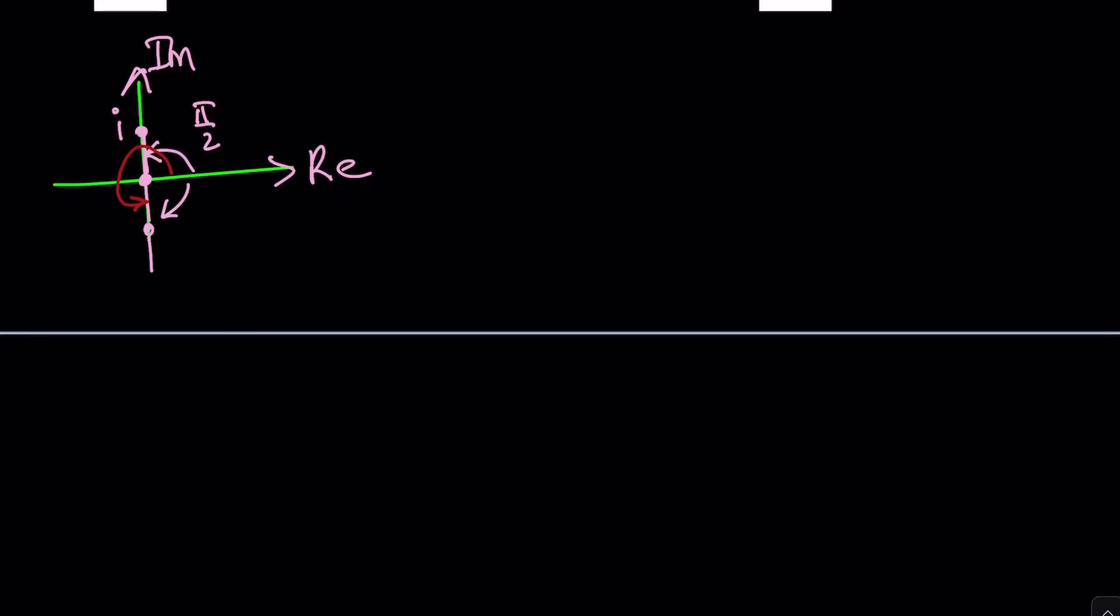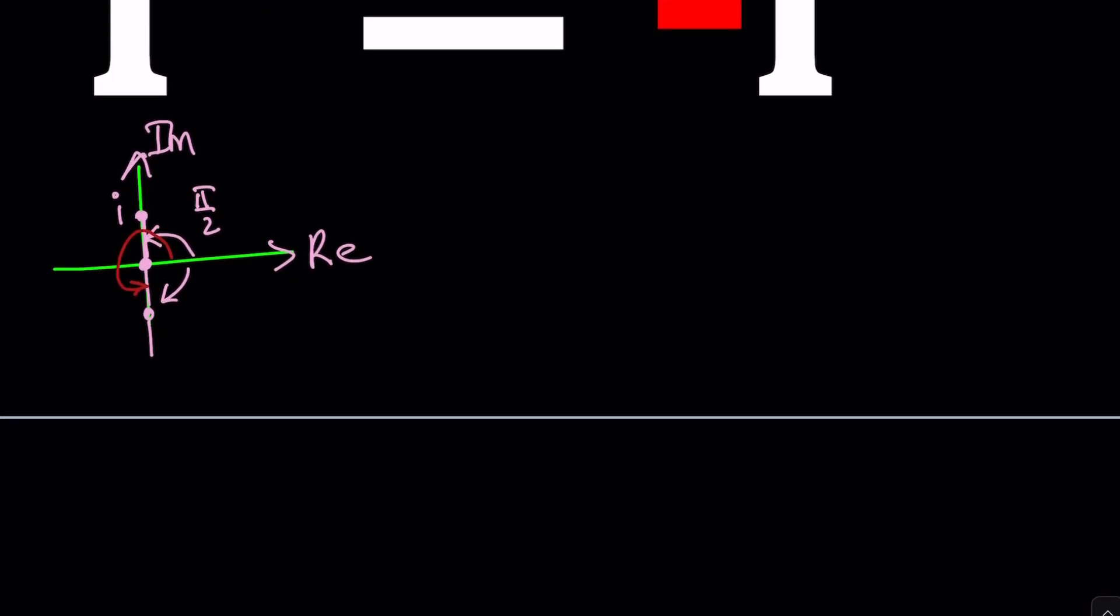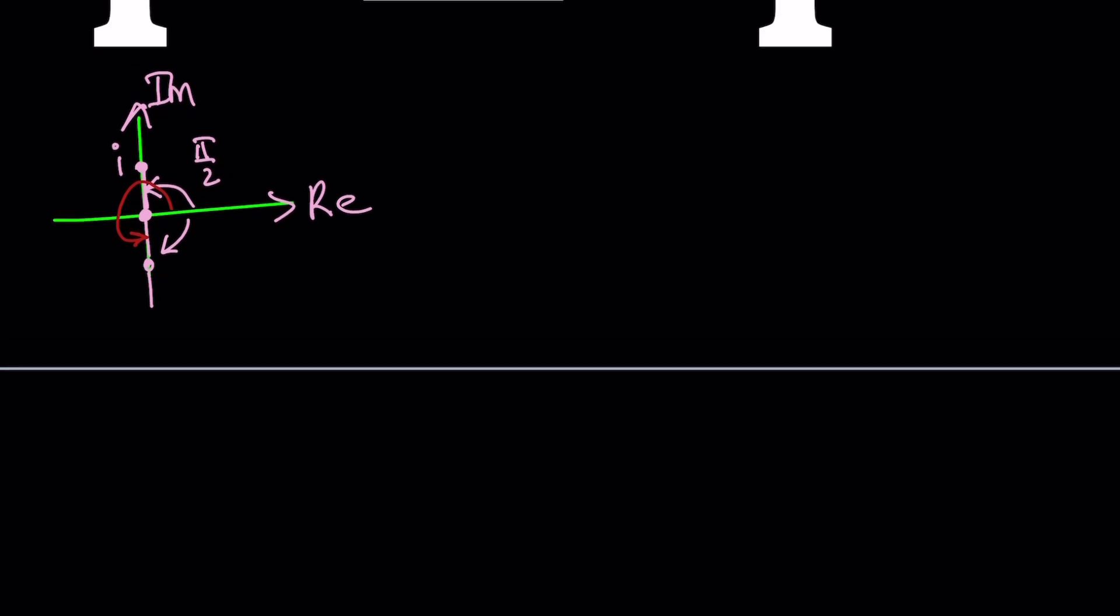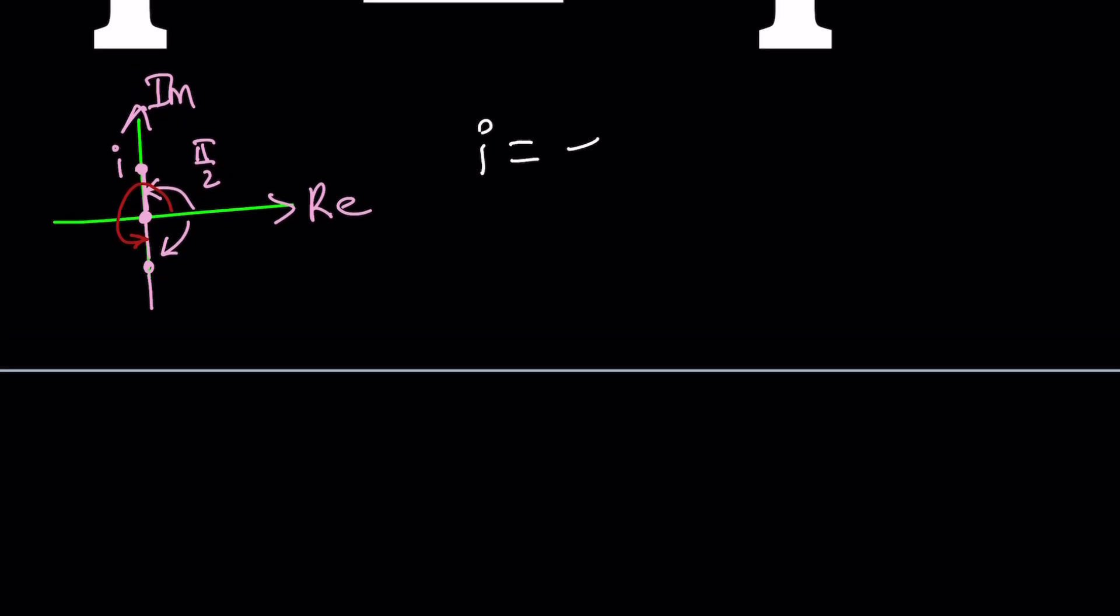I can be written as e to the power i pi over 2. Because pi over 2 is the argument for i. But wait a minute. You're allowed to add multiples of 2 pi. So I can actually add 2 pi n, can't I? We'll check that at the end. Don't worry. So let's just go ahead and write i that way.